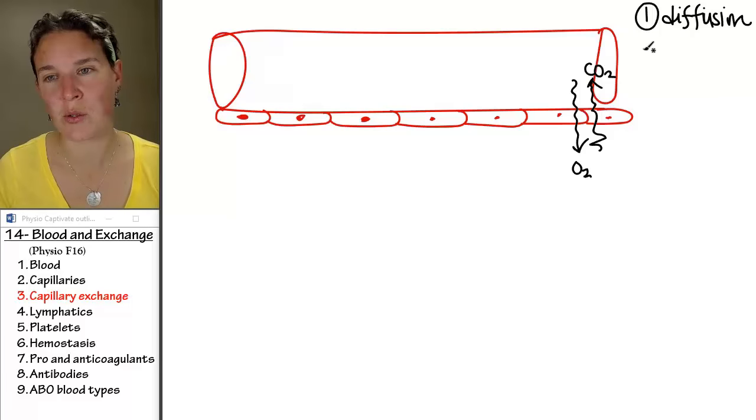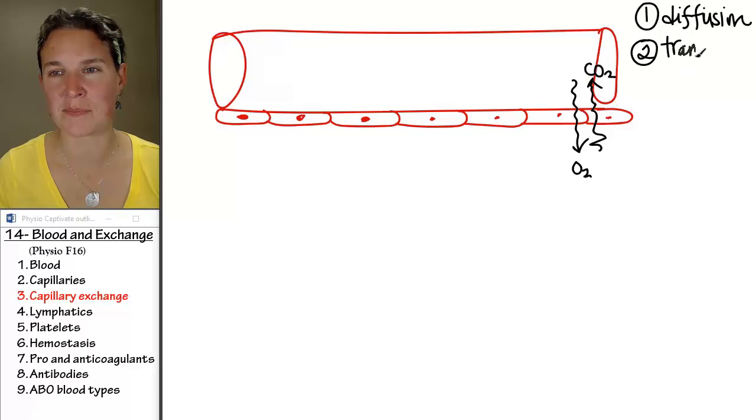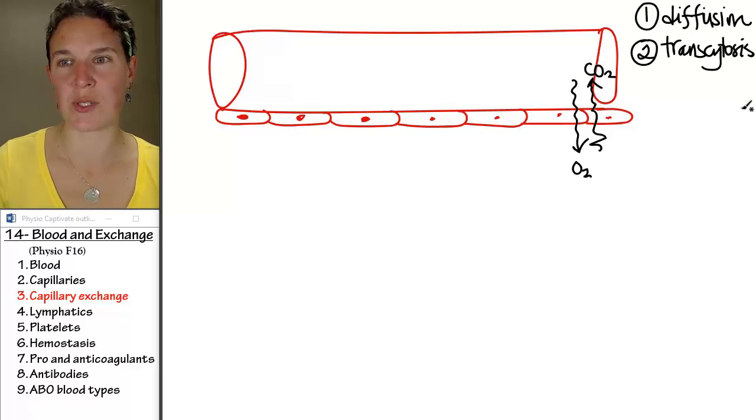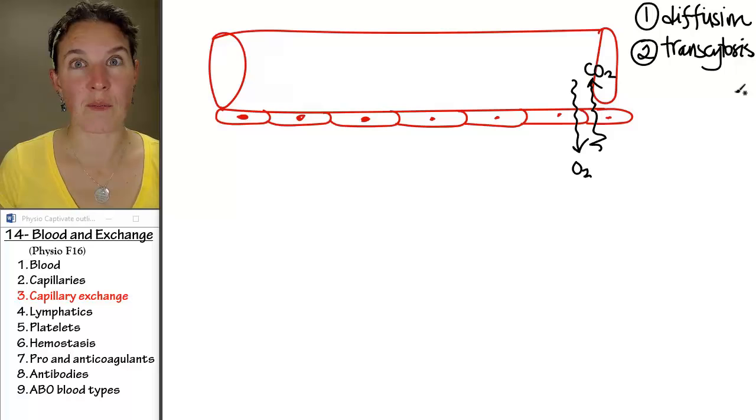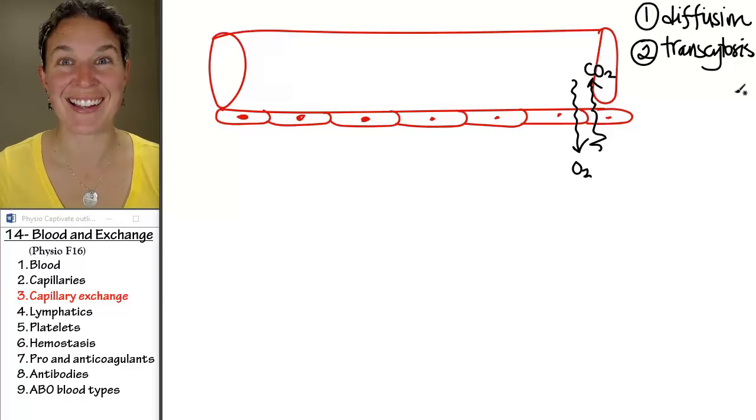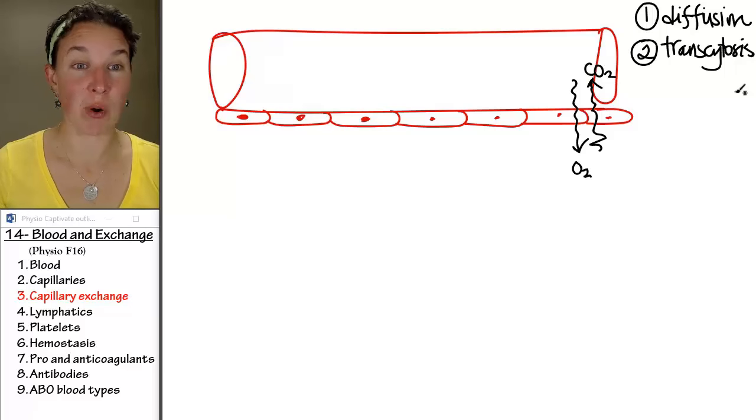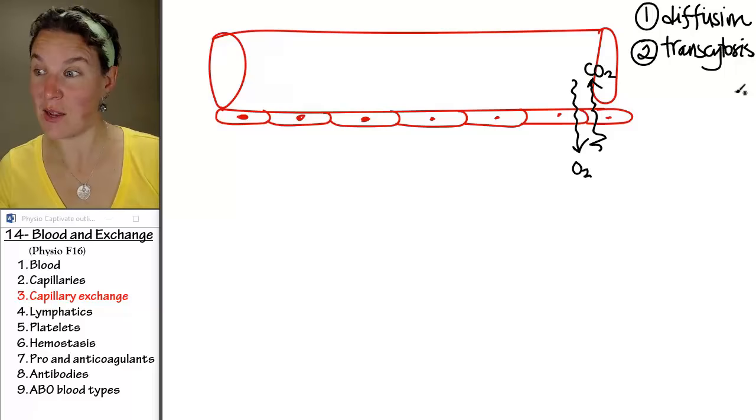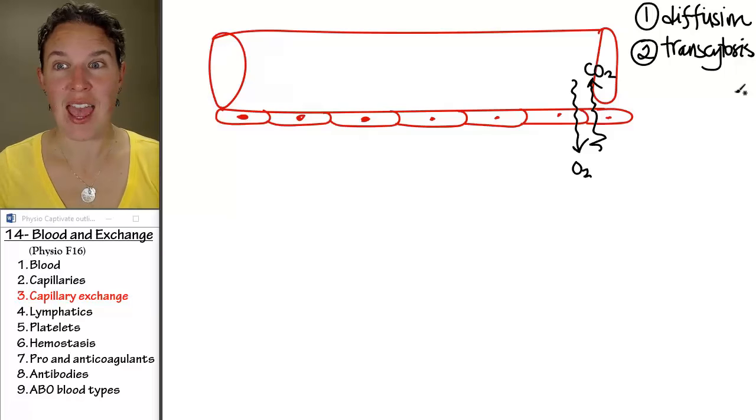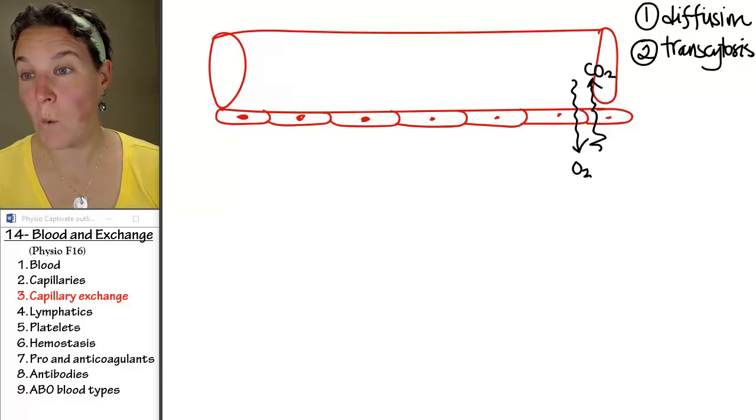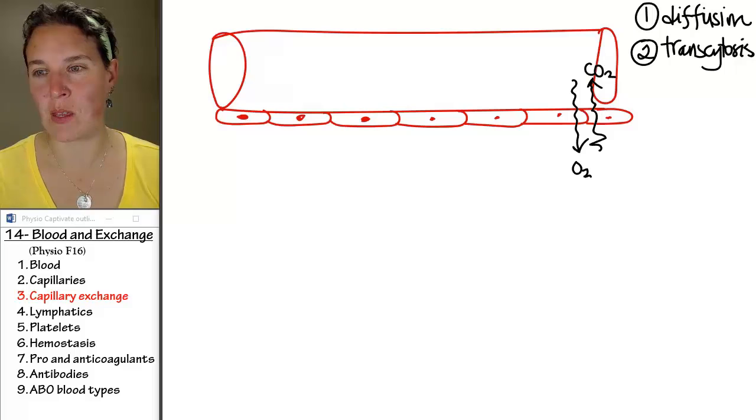Strategy number two is something called transcytosis. And what does that kind of sound like? Transcytosis is barfing on one end and yumptializing on the other end, and you move things through cell membranes. So, transcytosis, maybe blue.